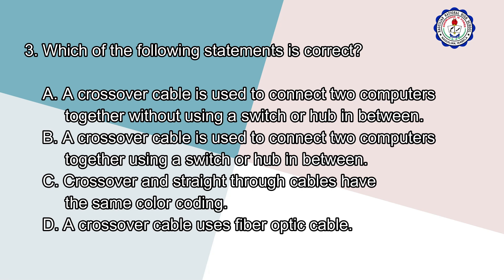Number 3: Which of the following statements is correct? A. A crossover cable is used to connect two computers together without using a switch or hub in between. B. A crossover cable is used to connect two computers together using a switch or hub in between. C. Crossover and straight-through cables have the same color coding. D. A crossover cable uses fiber optic cable.